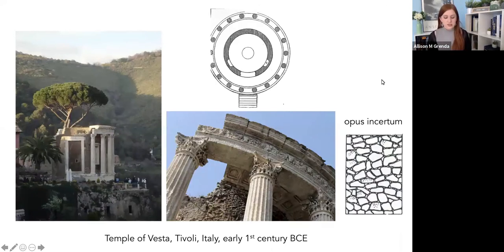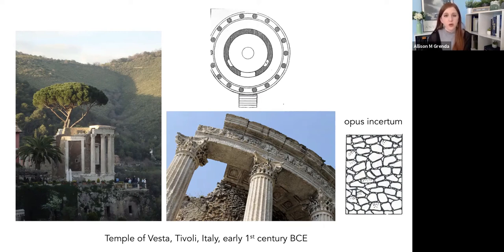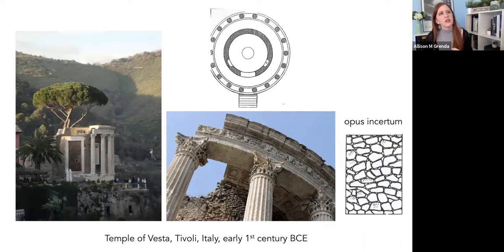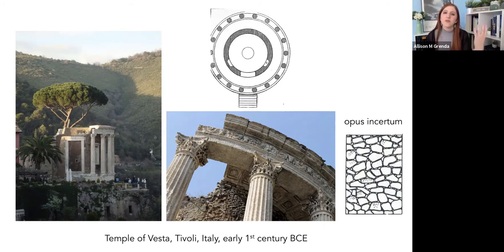Moving to another tholos: the Temple of Vesta in Tivoli — again showing Greek influence in these round temples which come from Greece. Tivoli is near Rome. Vesta is the goddess of the home, of the hearth — the goddess of family. You might remember the Temple of Vesta in the Roman Forum, where the Vestal virgins tended the eternal flame, which represented the family of Rome, the home of Rome, those sorts of elements. Here we have another Temple of Vesta in Tivoli, and this is about as Greek as we've got.